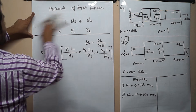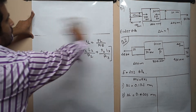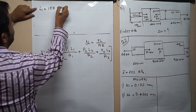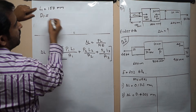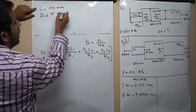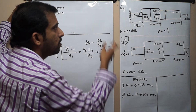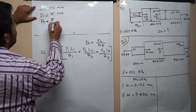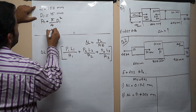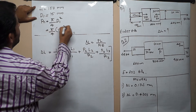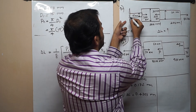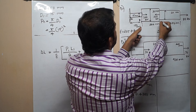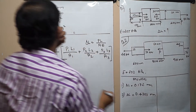First, we write the given data. L1 is given as 150 mm. D1 is given as 15 mm. As the cross-section is circular, A1 equals pi/4 times D1 squared, that is pi/4 times 15 squared. This is the area for segment AB. This is segment BC. This is segment CD.